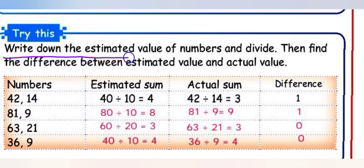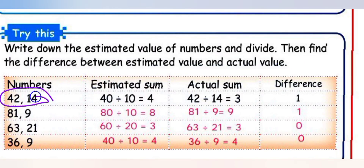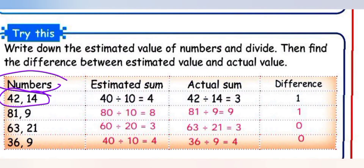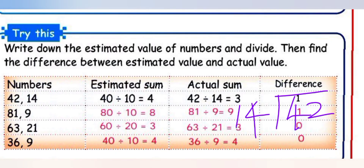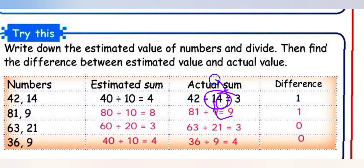Try this: Write down the estimated values and divide. Find the difference between estimated and actual values. First: 42 ÷ 14. Three 14s are 42, so actual answer is 3. Estimated: 42 rounded to 40 (ones place 2, less than 5). 40 ÷ 10 = 4. Difference is 1.